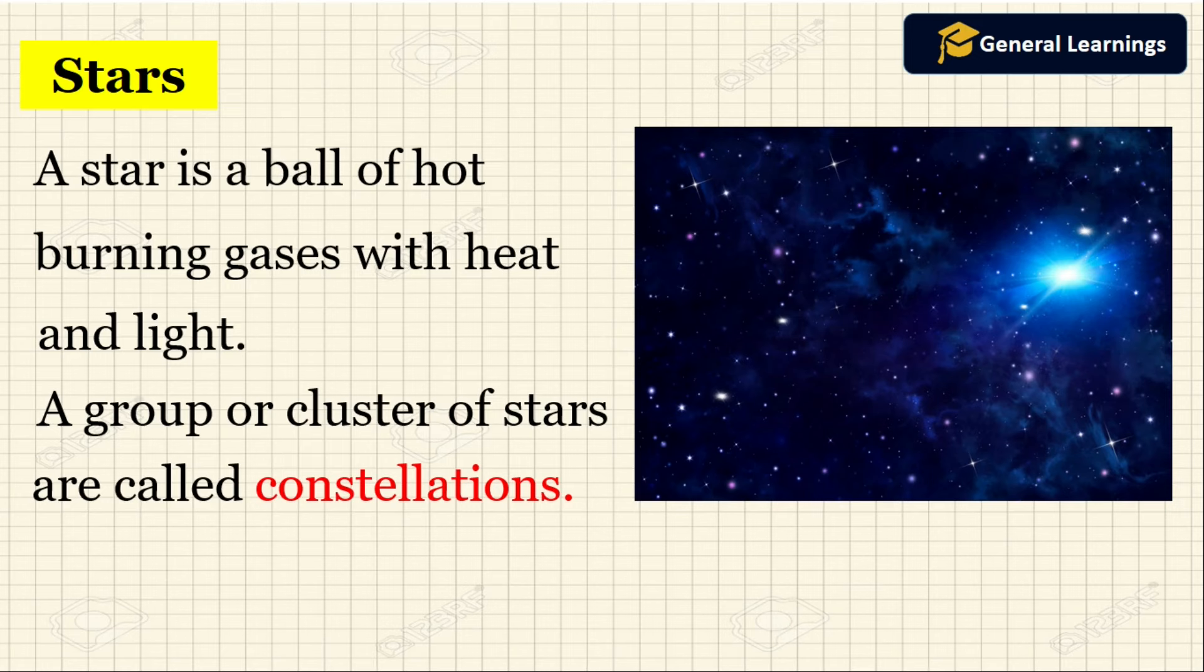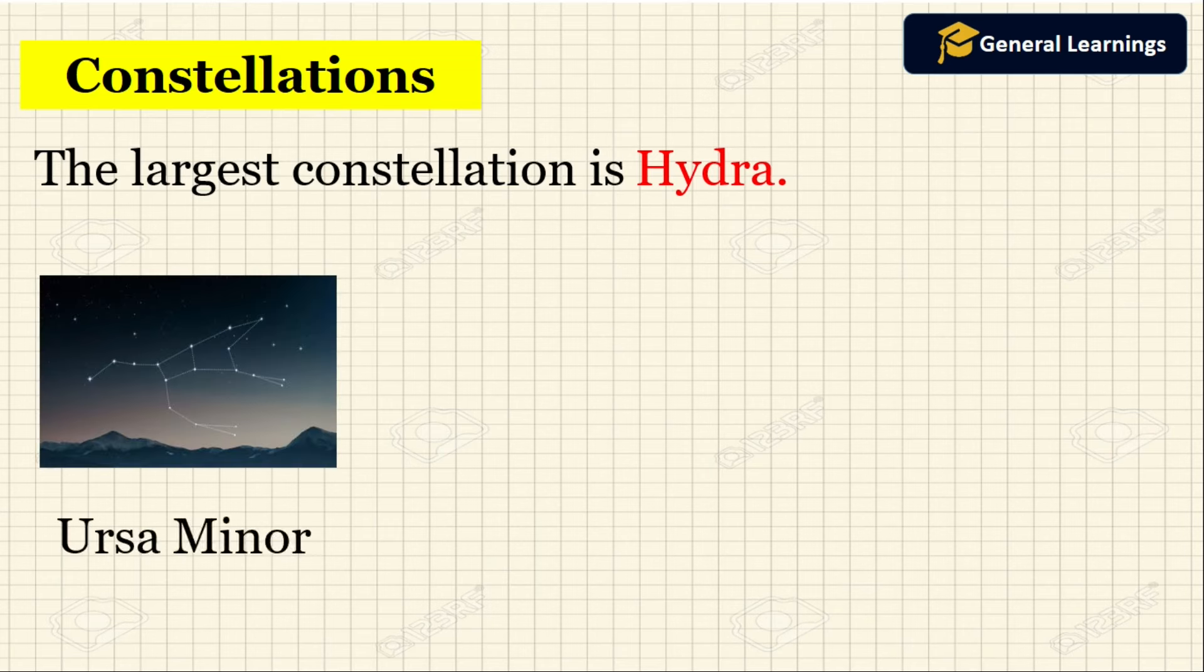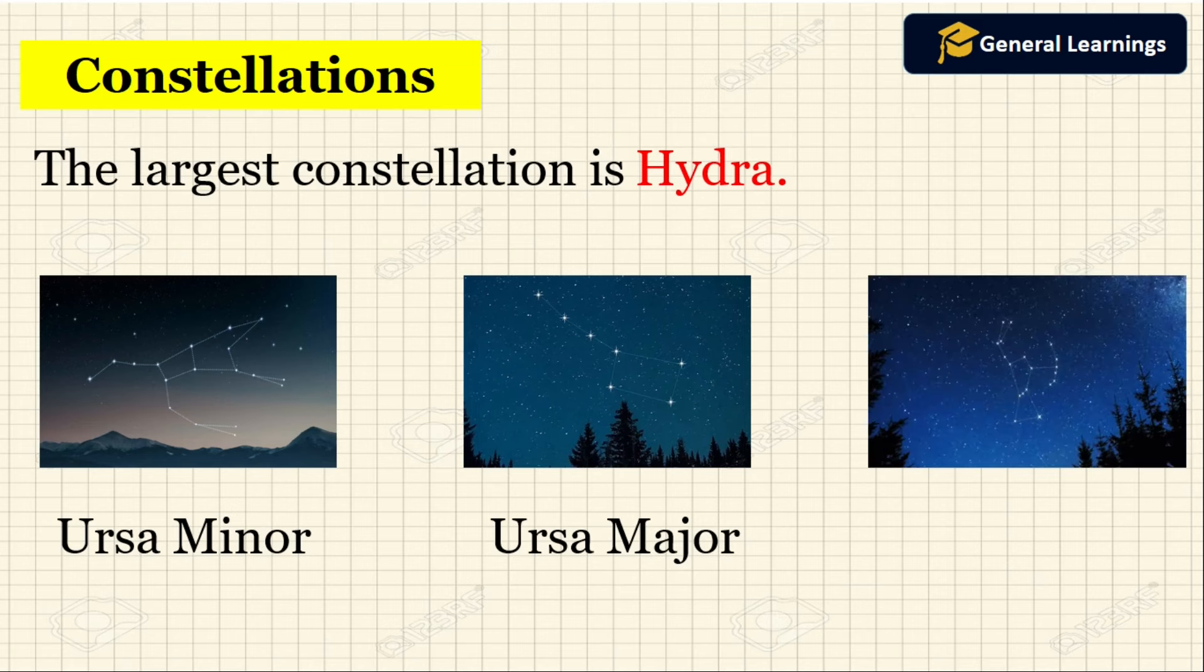A group or cluster of stars are called constellations. The largest constellation is Hydra and some other constellations are Ursa Minor, Ursa Major, and Orion.